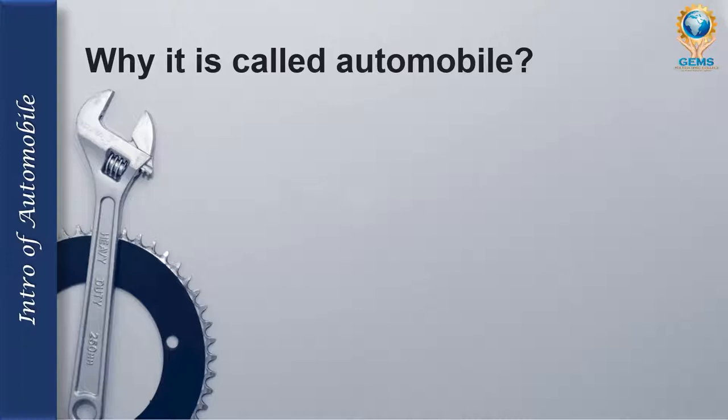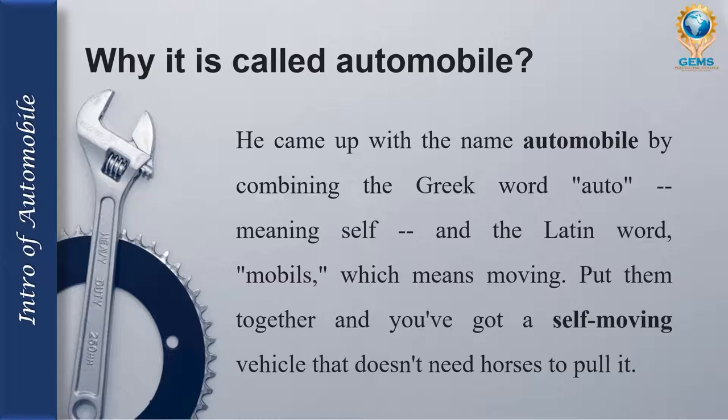Why is it called an automobile, and where did the name come from? The word 'auto' is a Greek word and the word 'mobile' is a Latin word. 'Auto' means self, and 'mobile' means moving — so automobile means self-moving.